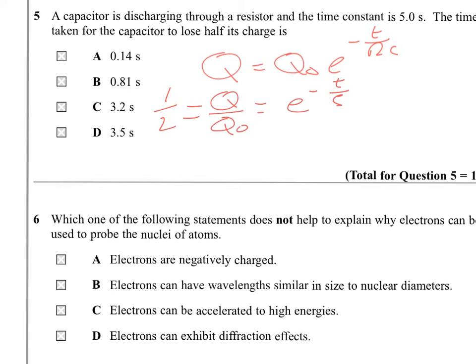And if we put the Q and Q naught values in, these are going to be 1 over 2, with Q naught being twice what Q is. So if we take the natural logs of that, we get the natural log of 0.5 equals minus T over 5.